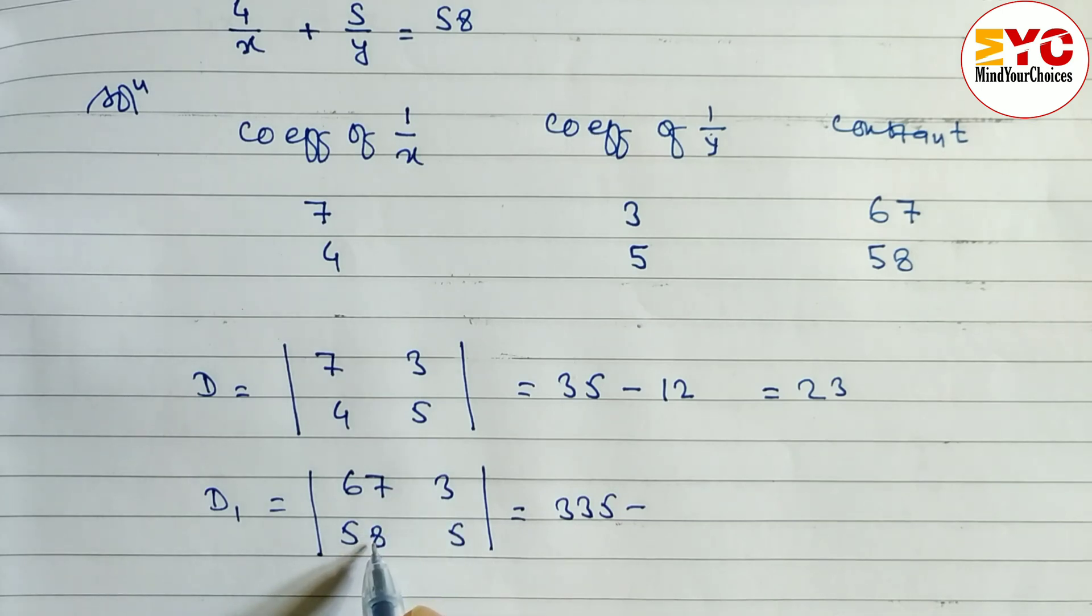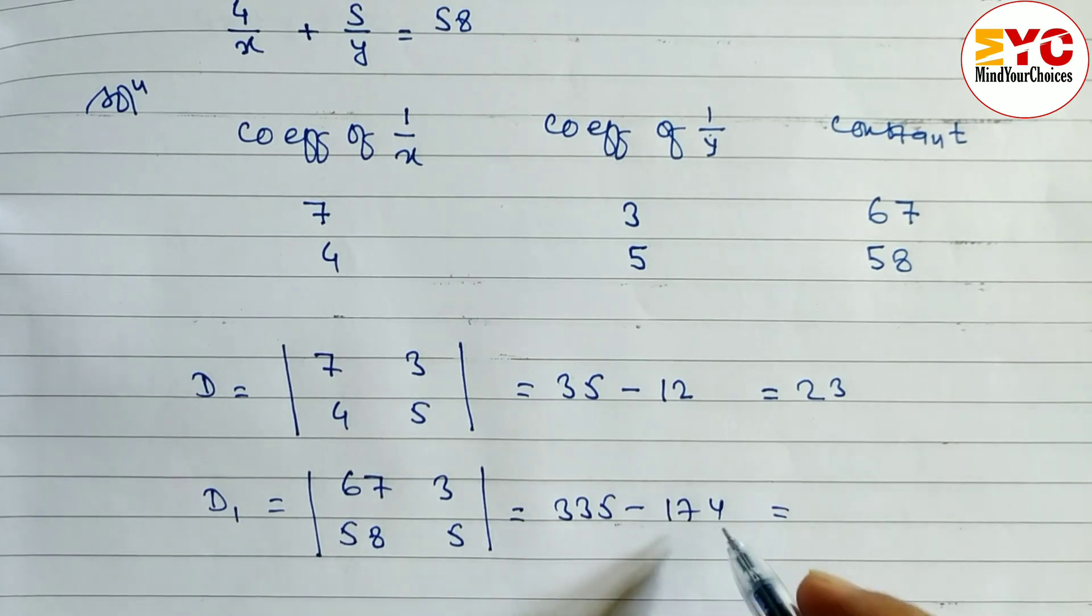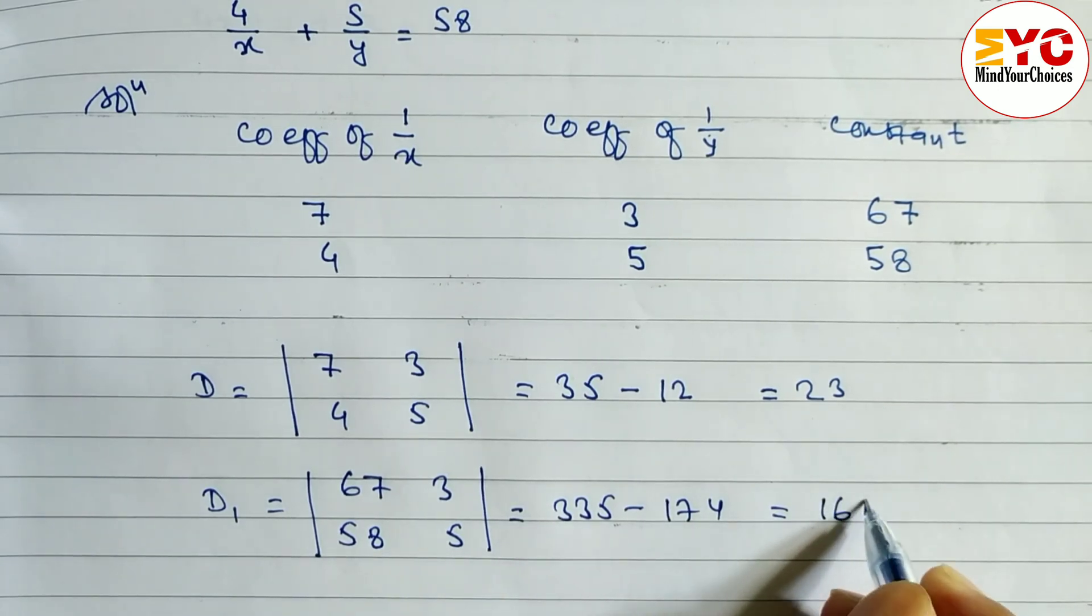67 into 5 we get 335 minus 58 into 3. 8, 3 out of 24. 4, 1, 74. 5, 3, 15, 16, 17. Yes. So let's subtract this and we get here 161.